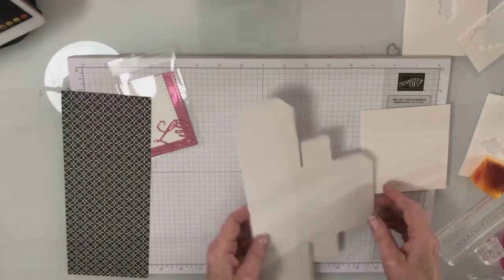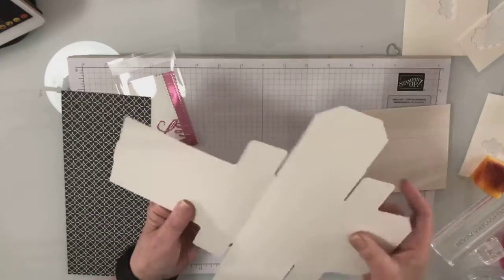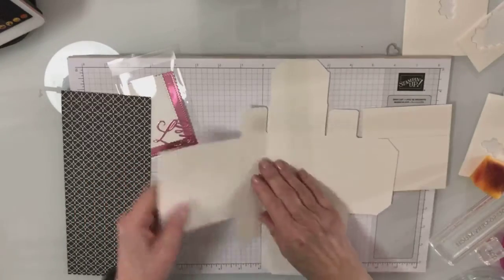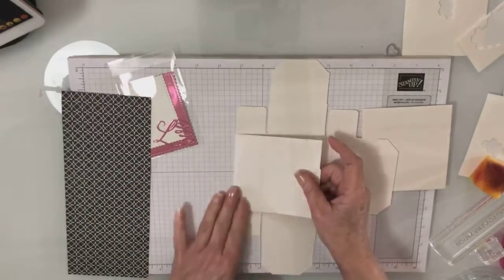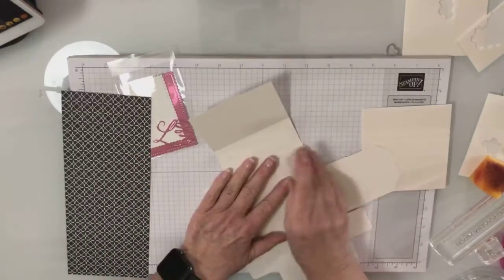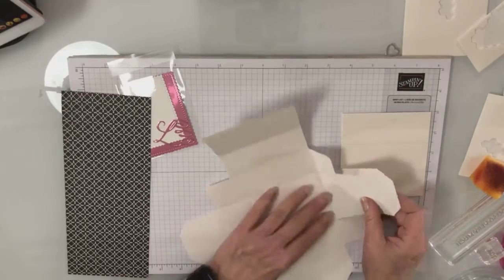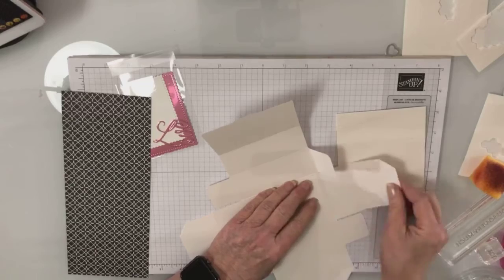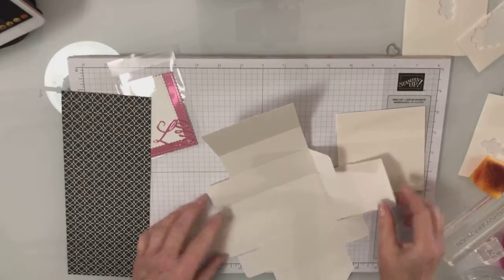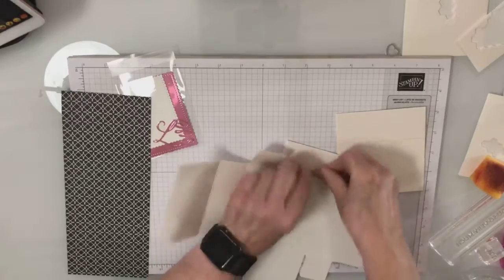This box is all scored for you and what you're going to do is just fold on all those fold lines. This one's going to come over and this one's going to come over even more. Actually, it's going to fold back, that one's going to fold back.